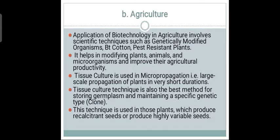In the agricultural field, biotechnology involves techniques such as producing genetically modified crops, Bt cotton, and pest-resistant plants. It helps in modifying plants, animals, and microorganisms to improve quality and productivity. Tissue culture is used for micropropagation — producing large-scale plants in a very short duration.